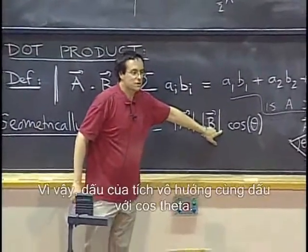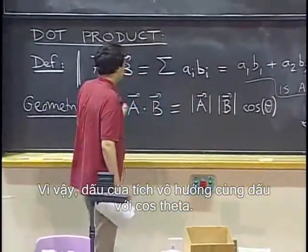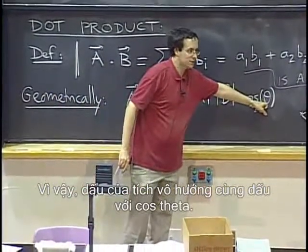the lengths are always positive. So the sign of the dot product is the same as the sign of cosine theta.